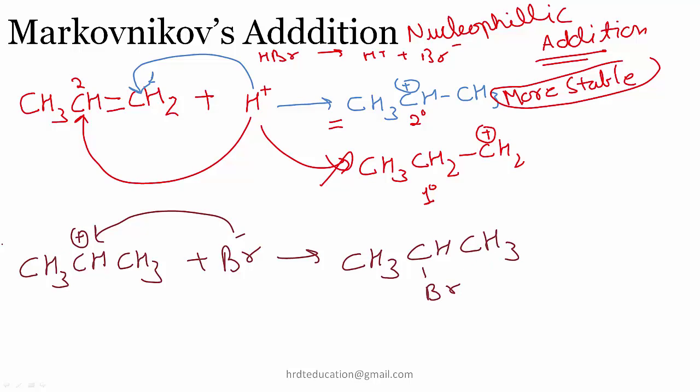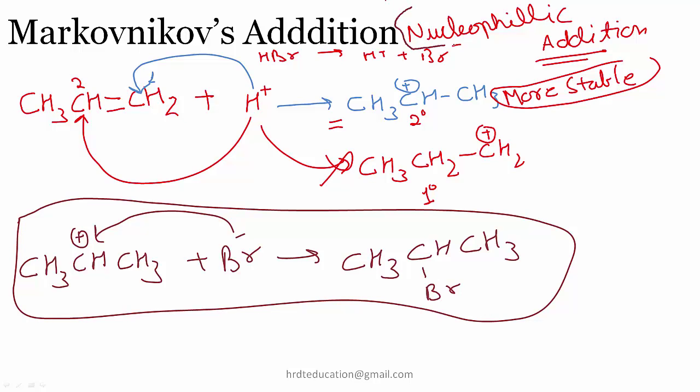So this is the reason. We have Markovnikov rule which says that addition of HBr or HCl takes place in such a way that hydrogen gets attached to that carbon atom which has greater number of hydrogen, and why? Because this reaction proceeds through nucleophilic addition mechanism and in this the first step is attack of hydrogen ion. When hydrogen ion attacks there are two chances: first is formation of secondary carbocation, second is formation of primary carbocation. According to that we get a secondary halide.